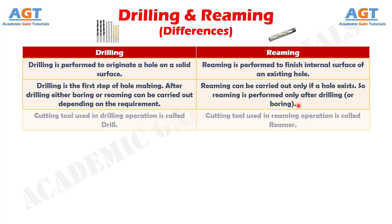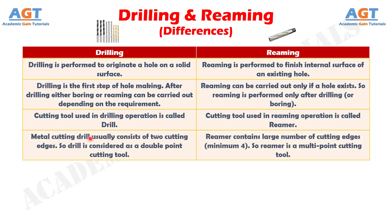Number three: the cutting tool used in a drilling operation is called a drill, whereas the cutting tool used in a reaming operation is called a reamer. Number four: a metal cutting drill usually consists of two cutting edges, so a drill is considered a double-point cutting tool, whereas a reamer contains a large number of cutting edges — minimum four — so a reamer is a multi-point cutting tool.